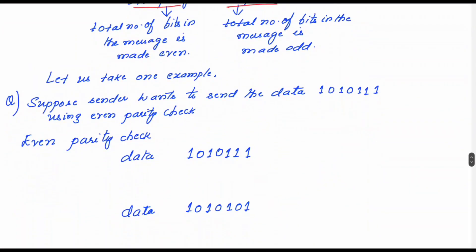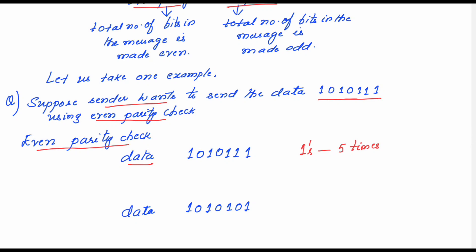Let me give an example of even parity. Suppose the sender wants to send the data 1010111 using even parity check. In this data, the digit 1 appears 5 times. Since the sender is using even parity, it has to make the number of ones even — so 5 should become 6. The sender appends one bit to achieve this.